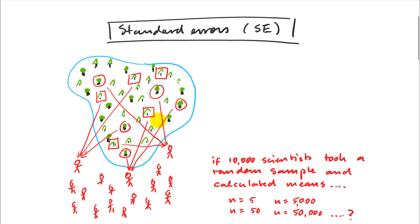If they took 50 samples, they would probably be getting closer results, closer to the true population mean. And as you increase your sample size, your certainty would increase.